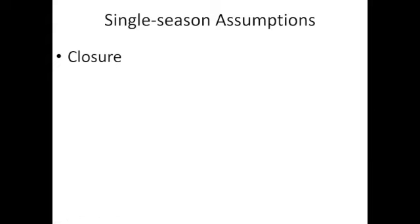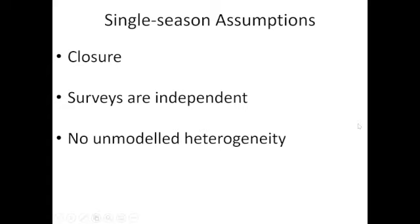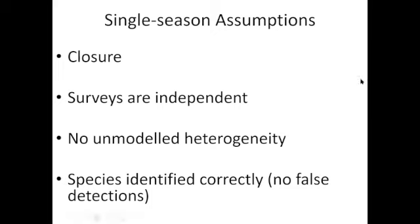The assumptions of a single-season model are: sites are closed to immigration, emigration, births, and deaths; surveys are independent — so detections on day one are independent of day two, and double-observers should not share what they see; and there is no unmodeled heterogeneity, meaning habitat associations and detection probability effects need to be accounted for in our models.